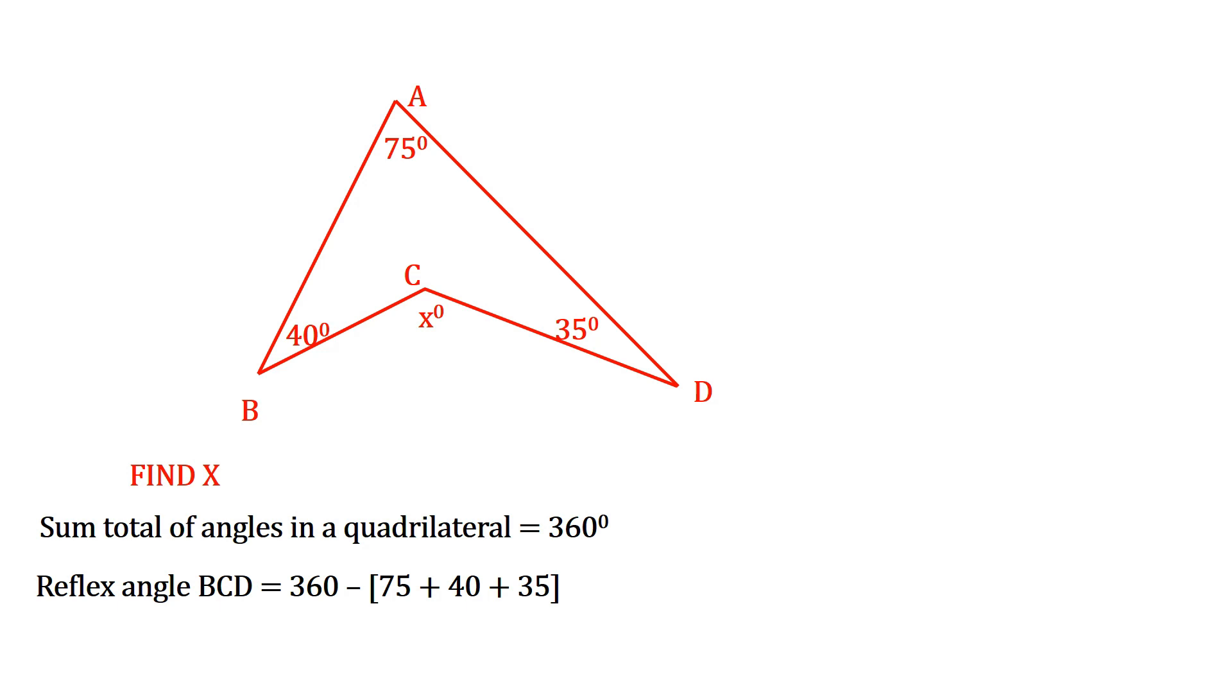So we have 360 minus 75 plus 40 plus 35 degrees. That gives us 360 minus 150 degrees, and that is 210 degrees.